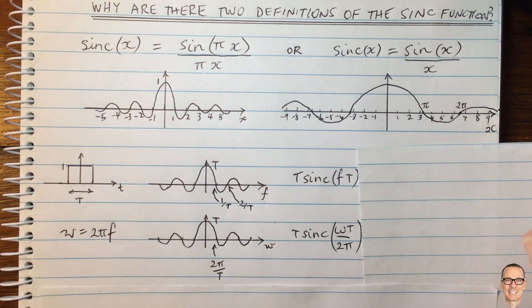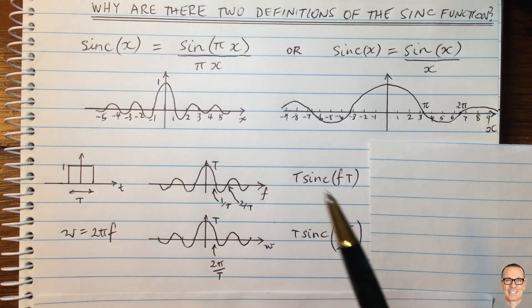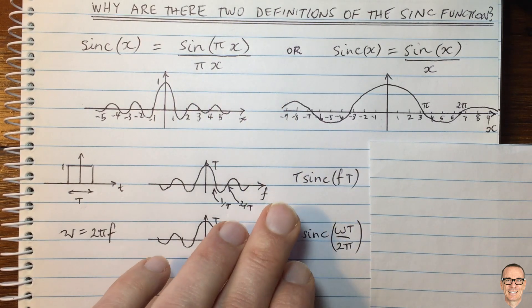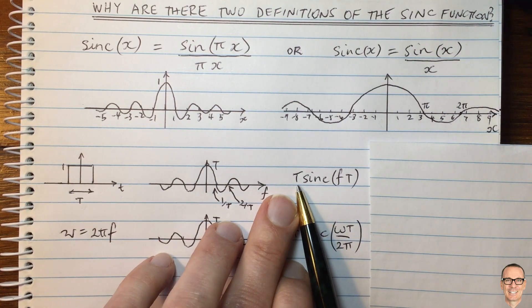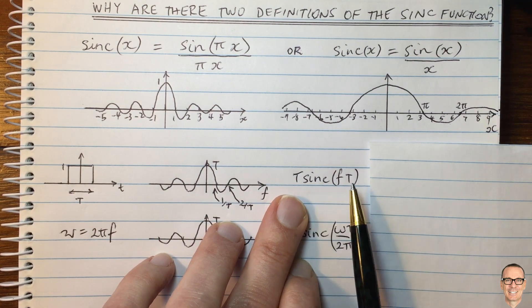So now let's think about how we write these functions in terms of these sinc functions. So if we write the function here in terms of the left-hand definition of sinc, then we see that this function in terms of f is capital T times sinc fT. It's a very convenient form.